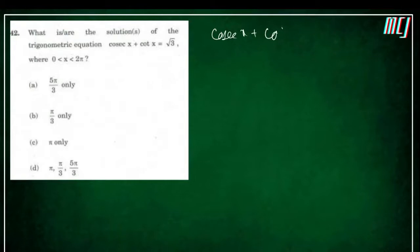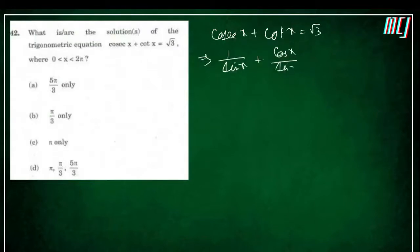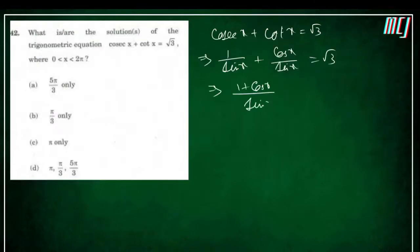Next question: find principal solutions in [0, 2π]. The equation is cosecx + cotx = √3. This gives (1 + cosx)/sinx = √3.